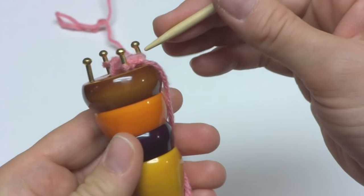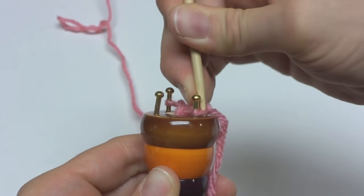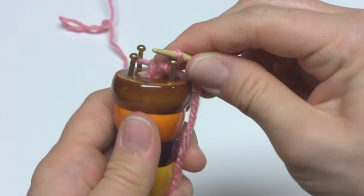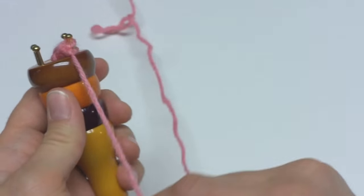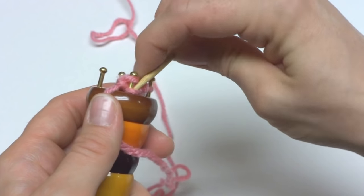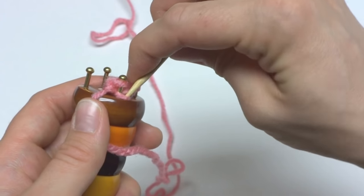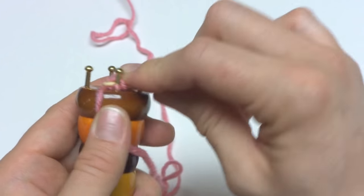Then take the loop that's remaining and lift it up and put it on the next peg just like that. And then lift that loop up and over that peg.